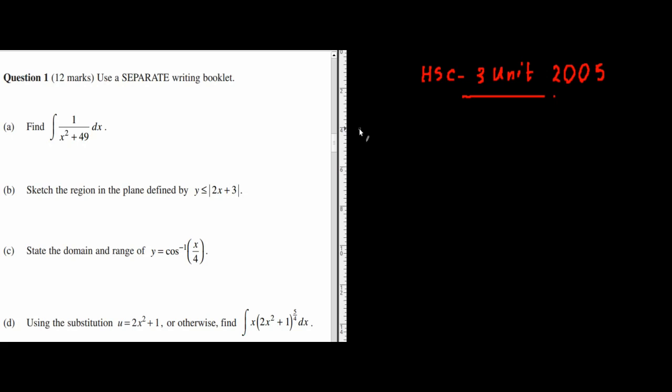Question 1 is asking you to do the integral of 1 over x squared plus 49. If you look at this question, it's 1 over x squared plus a squared, where a is 7. This is straight out of the standard integral table and you will get 1 on 7, tan inverse of x on 7 plus c. That's all there is to it.